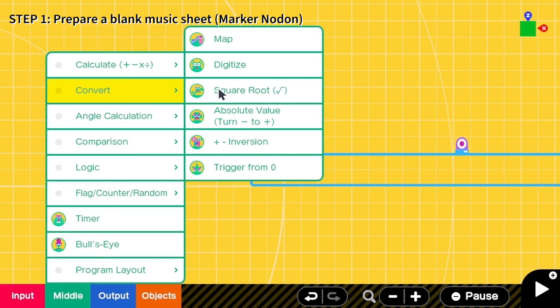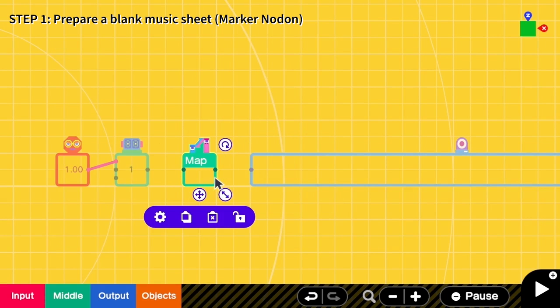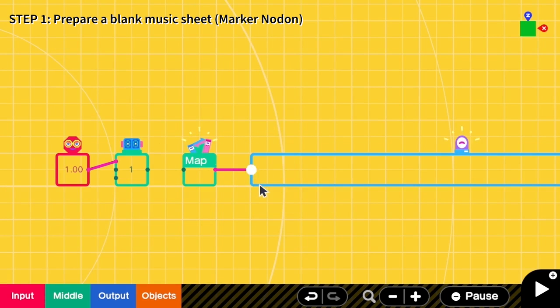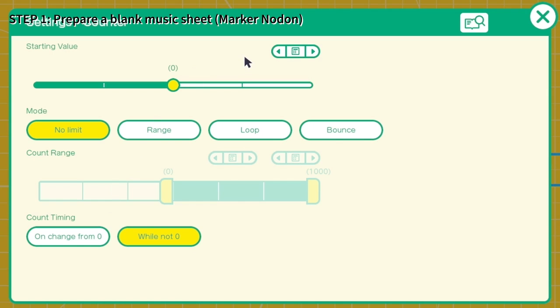So we need convert map. We set the output of the map to this marker nodon. To set the speed, how fast we want to read, we have to go to the counter configuration and then set the starting value to be 0, the mode is range. The value of the counter increases by 60 every one second.